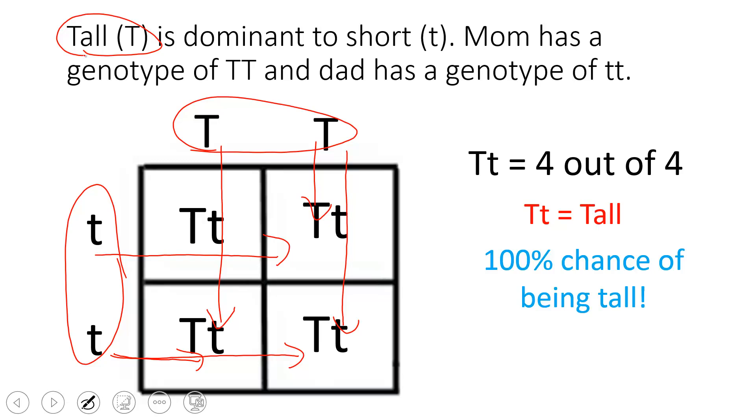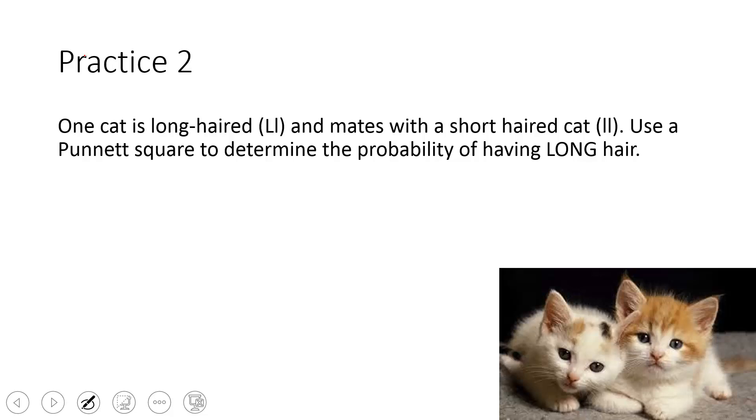Let's try one more. One cat is long-haired and mates with a short-haired cat. Use a Punnett square to determine the probability of having long hair. Go ahead and try this on your paper now.